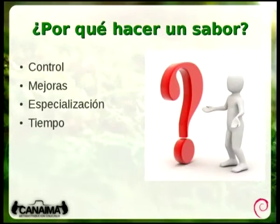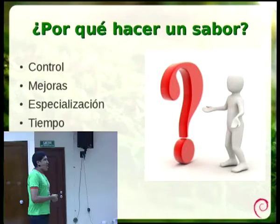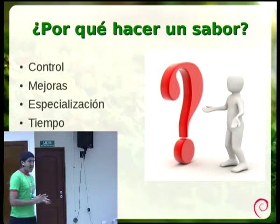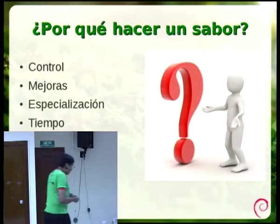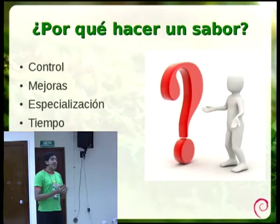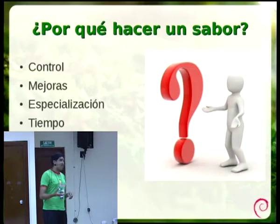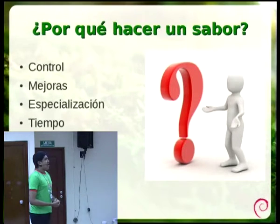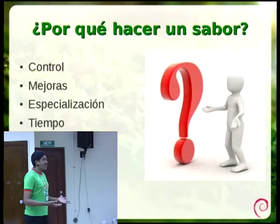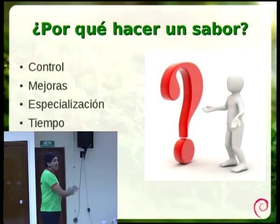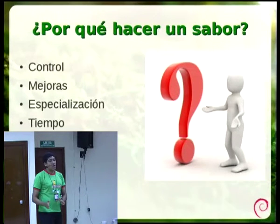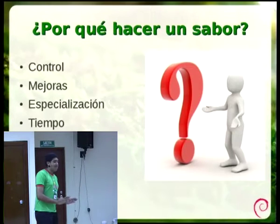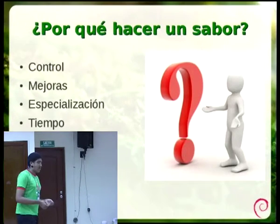¿Por qué querríamos hacer un sabor, por qué no usar la distribución padre de una vez? Hay cosas que es posible que la distribución padre no haga como nosotros deseamos. Haciendo una distribución derivada, podemos tener mayor control sobre lo que sucede en determinado momento del ciclo de vida de la distribución —por ejemplo, si no queremos actualizar cada año o cada seis meses como hace Ubuntu y Canaima. En resumen, podemos tener mayor control sobre lo que pasa.